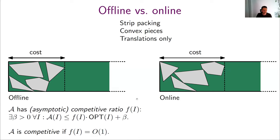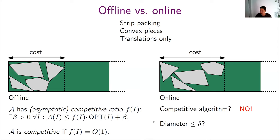The big question was: can we find an algorithm for strip packing convex polygons without rotation which is competitive — always at most some constant away from the optimum? We prove that no such algorithm exists. Even if you restrict yourself to only tiny pieces, there's no competitive algorithm. This means that if your fabric is one meter wide, then whatever algorithm you suggest, I can find a stream of pieces that can be packed using just two meters of fabric, but your algorithm will use a billion kilometers. I think that's actually quite remarkable.